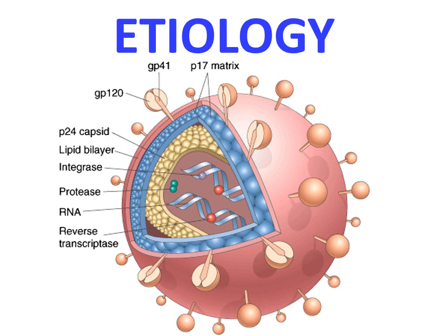p24 is the viral antigen that is the target of most diagnostic antibody assays. The viral genome contains many retroviral genes, including gag, pol, and envelope genes, which are also targets of therapeutic drugs.